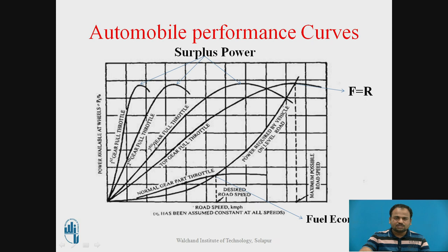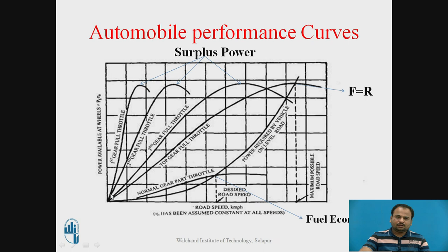This is the performance curve, which is power available versus road speed. When your vehicle starts from its initial position, it requires more torque — torque means you require more power. So initially, in the first gear, if your vehicle is at full throttle, then you are applying more power, having low speed, and getting more torque.